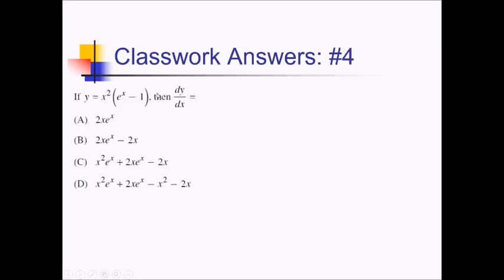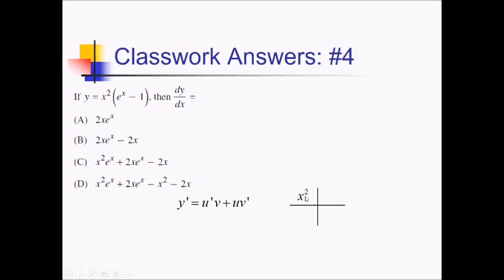For this problem we're trying to take the derivative of x squared times e to the x minus 1. This is going to require a product rule. You could distribute the x squared first, or just do the product rule right now — I'm just going to do it right now. Using u prime v plus u v prime with the box and ribbon, I've got factors of x squared and e to the x minus 1.